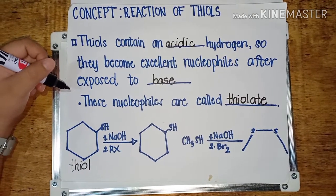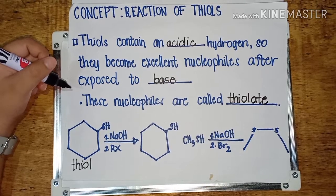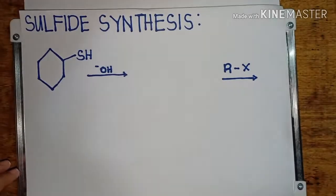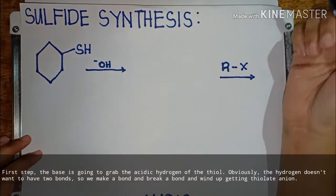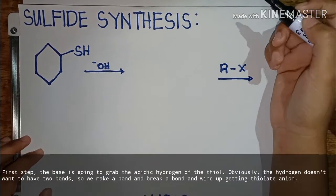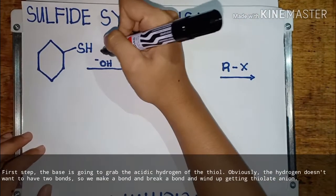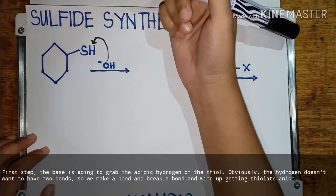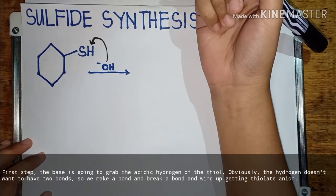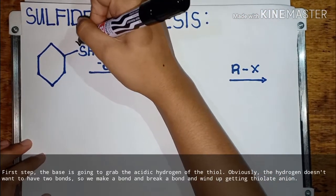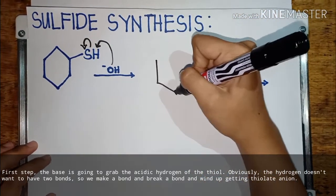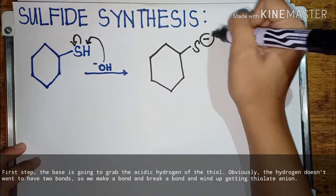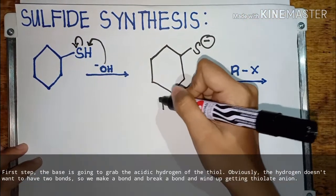Now let's look at the full mechanism. First step: the base is going to grab the acidic hydrogen of the thiol. The hydrogen doesn't want to have two bonds, so we make a bond and break a bond, and we wind up getting the thiolate ion.